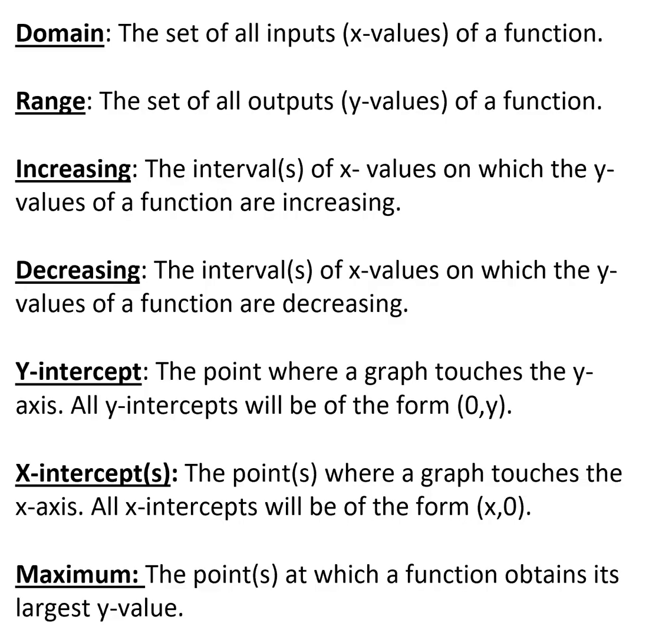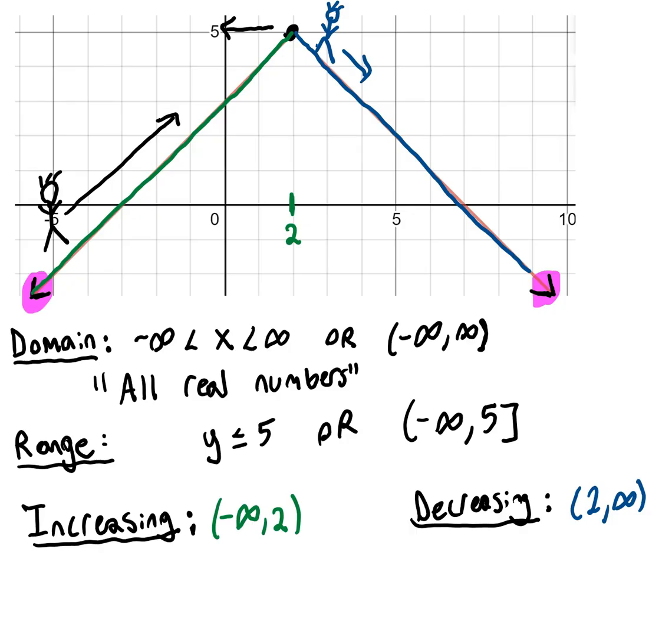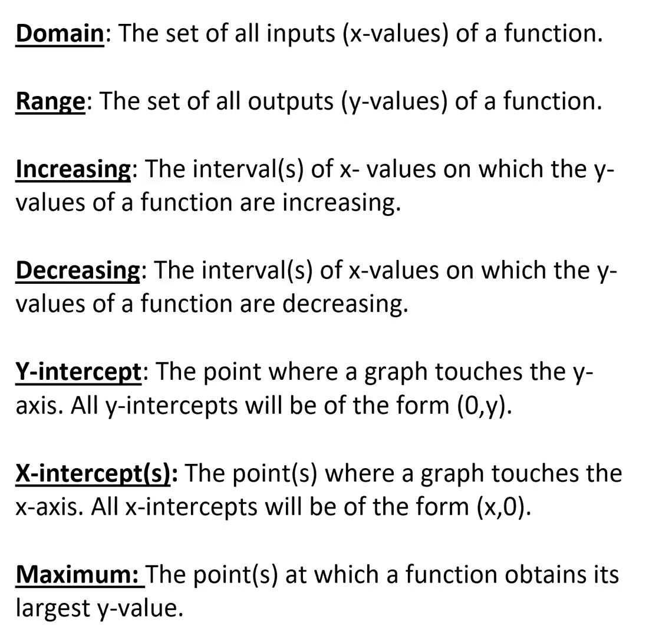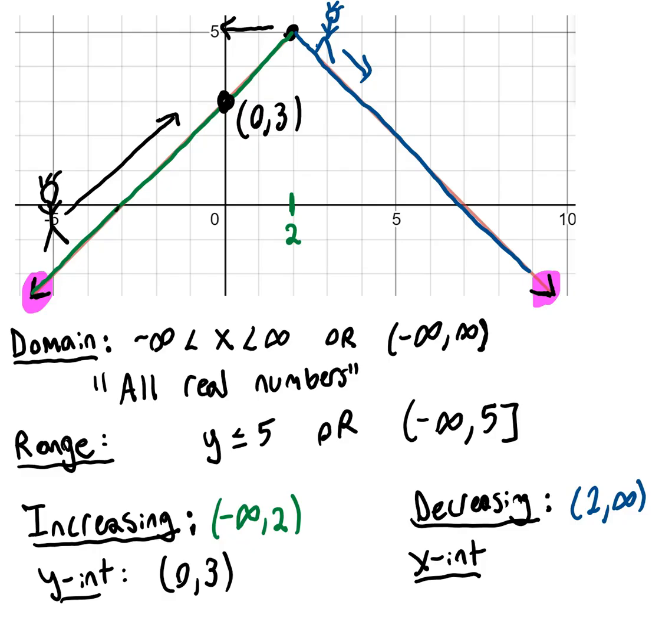The y-intercept is the point where the graph touches the y-axis, and all y-intercepts are of the form (0, y). We can see here our y-intercept is that point (0, 3). Our x-intercept is the points where the graph touches the x-axis, and all x-intercepts are of the point (x, 0), so some x value comma 0. There's an x-intercept and there's an x-intercept.